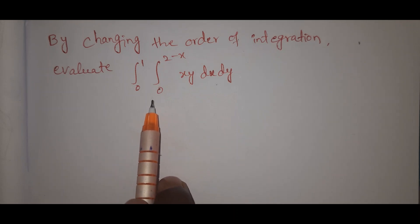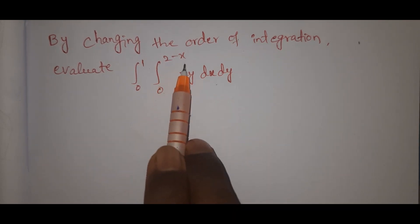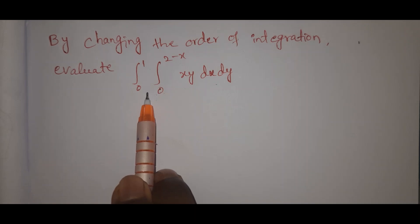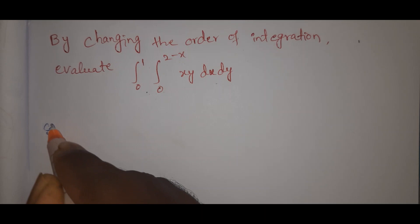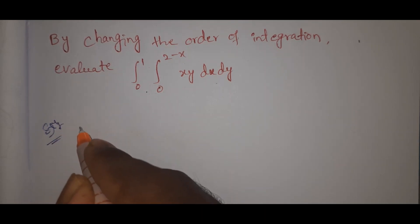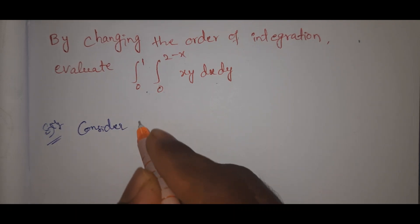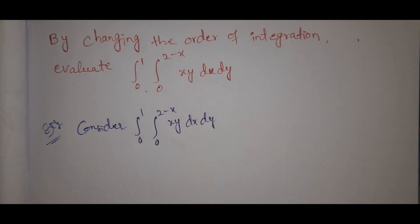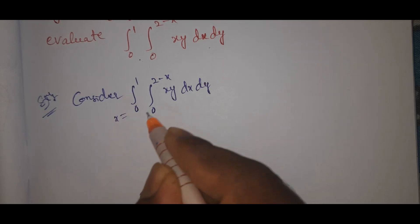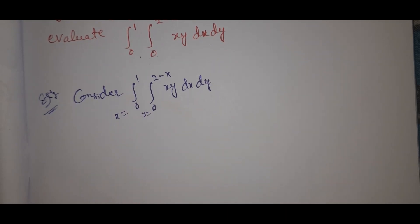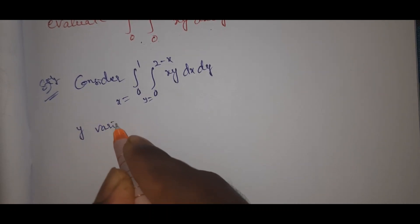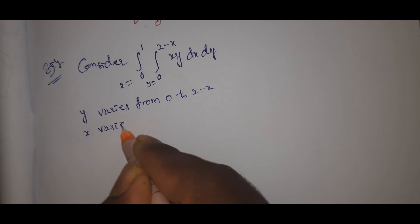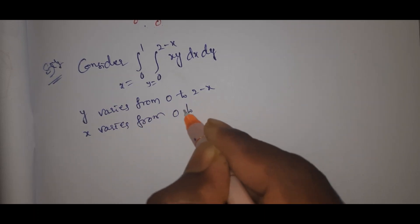Now see here, we have the integral 0 to 1 and 0 to 2 minus x. Here the y limits go from 0 to 2 minus x, and x varies from 0 to 1. Consider integral 0 to 1, 0 to 2 minus x, xy dx dy. This is the x limits and this is the y limits. y varies from 0 to 2 minus x, and x varies from 0 to 1.